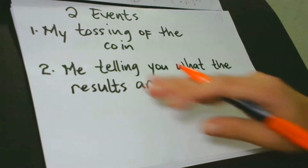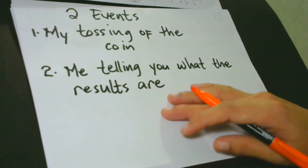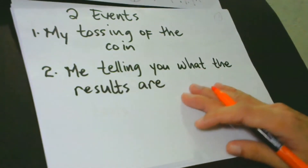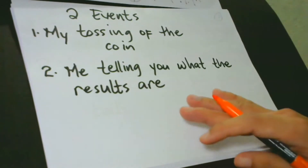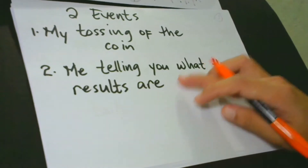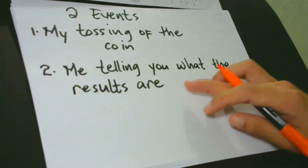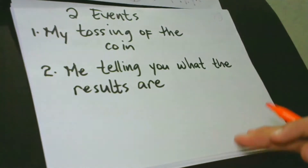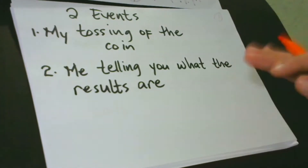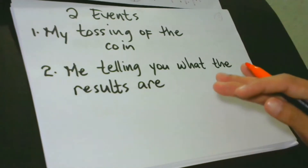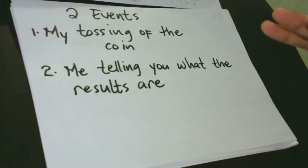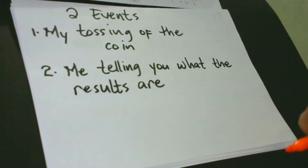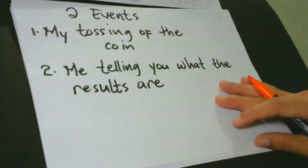The first event is my tossing of the coin, and the second event is me telling you what the results are. The dependent event is me telling you about the results. It means that if I cannot toss the coin, I cannot tell you anything. It's like I cannot give you something if I do not own it. Now, let's make an assumption: these two events are represented by two random variables.